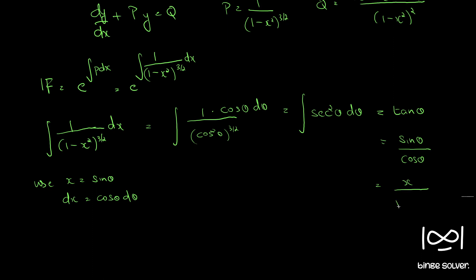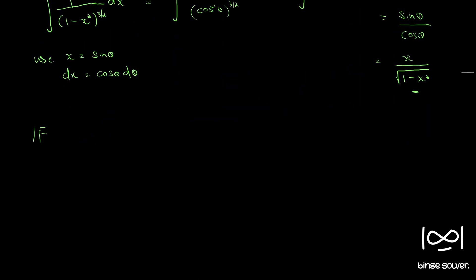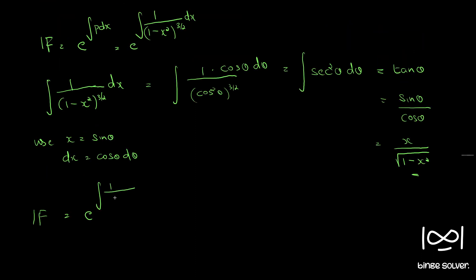Converting back in terms of x: since sin θ = x, tan θ = sin θ / cos θ = x / √(1-x²). So the integral is x/√(1-x²), and therefore the integrating factor is e^(x/√(1-x²)).